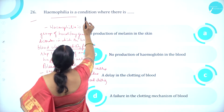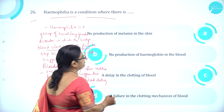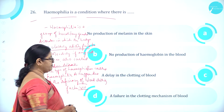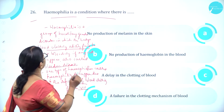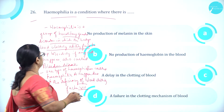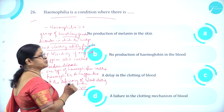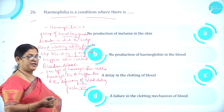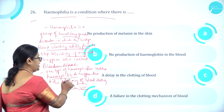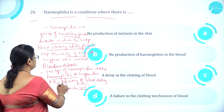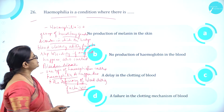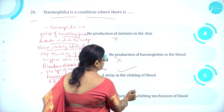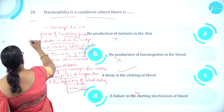Moving on to question number 26. Haemophilia is a condition where there is option A no production of melanin in the skin, option B no production of hemoglobin in the blood, option C a delay in the clotting of blood, option D a failure in the clotting mechanism of blood. Haemophilia is a group of hereditary genetic disorders in which the body's blood clotting ability fails to stop bleeding from cuts or wounds — also called bleeder's disease. Haemophilia A is due to deficiency of blood clotting factor 8. So option C is correct.